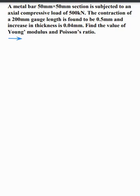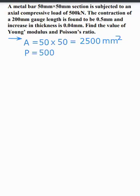First of all, write down the given data. Cross-sectional area A is equal to 50mm into 50mm, it will get 2500 mm square. The bar is subjected to an axial compressive load, that is P is equal to 500 kN. That is in N, 500 into 10 raised to the power 3 N.